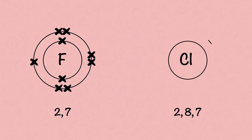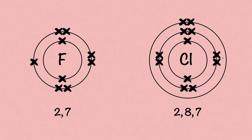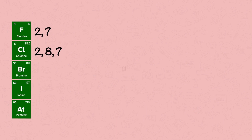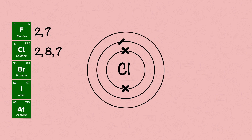The electronic structure for fluorine is two electrons in the first shell and seven in the second. The electronic structure for chlorine is two electrons in the first shell, eight in the second shell and seven in the third. Note that they all have seven electrons in the outer shell. This gives them their similar properties and explains why they react similarly.